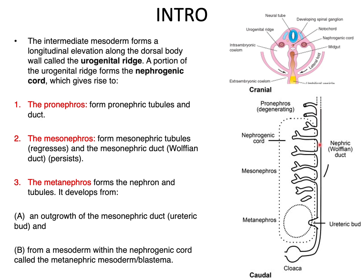The pronephros forms pronephric tubules and its duct. This duct and the tubules — which we call nephrotomes — together form the pronephros. We call that the Wolffian duct or the nephric duct. When it comes to the mesonephros, its tubules and its ducts form the mesonephros. Then the metanephros also forms the nephron and its associated tubules, because this is going to be the final kidney.